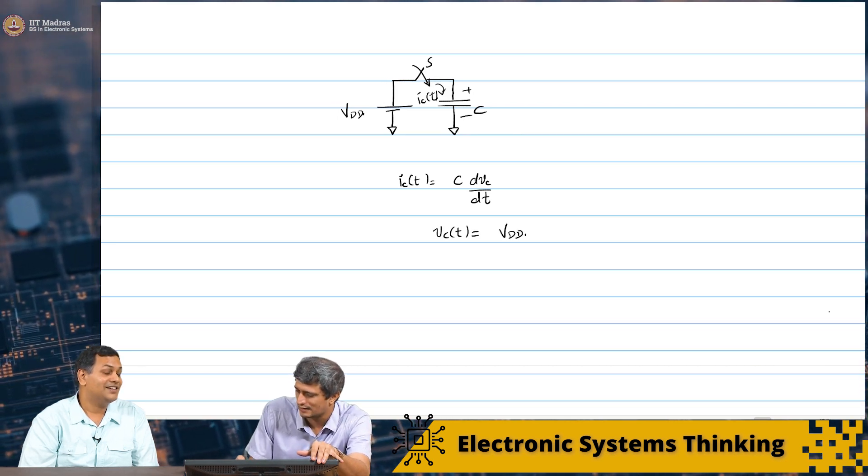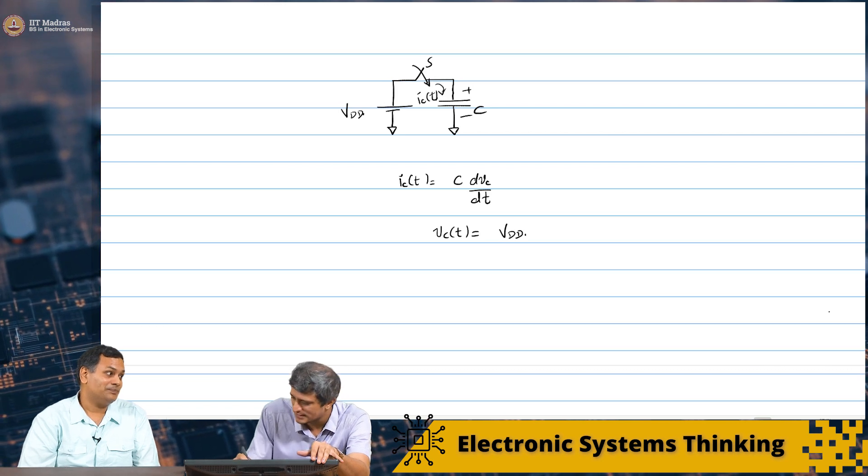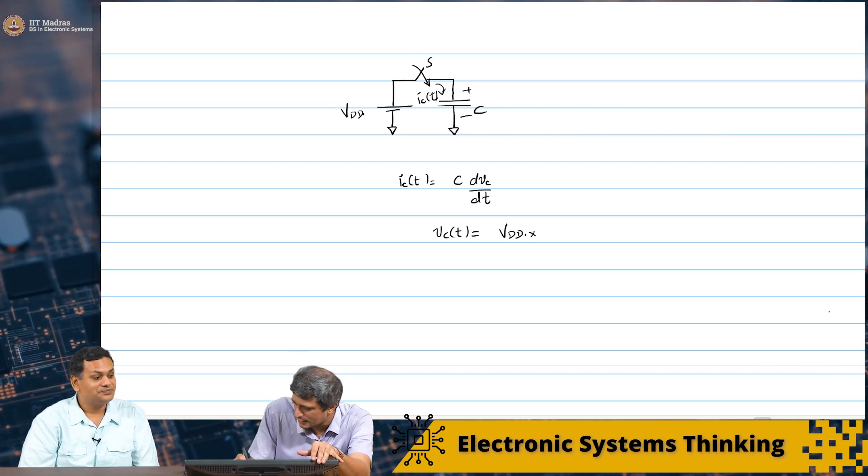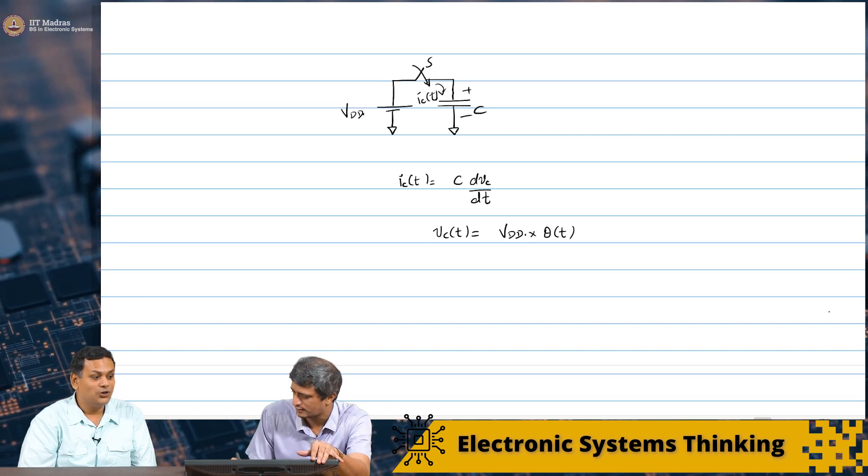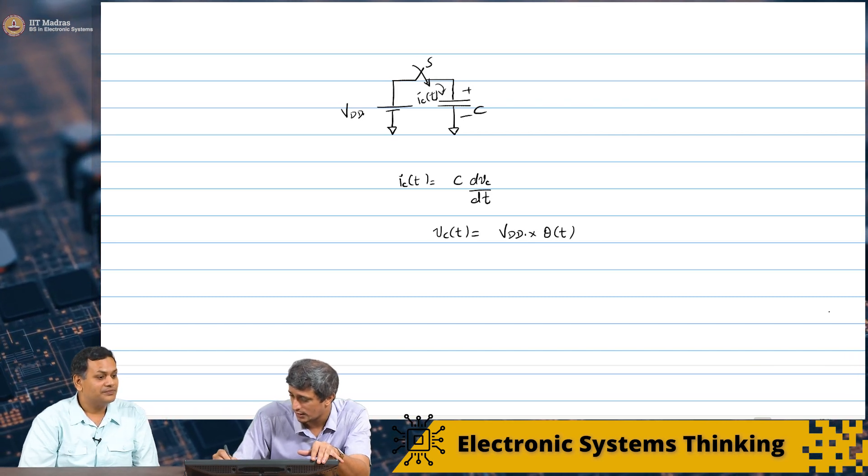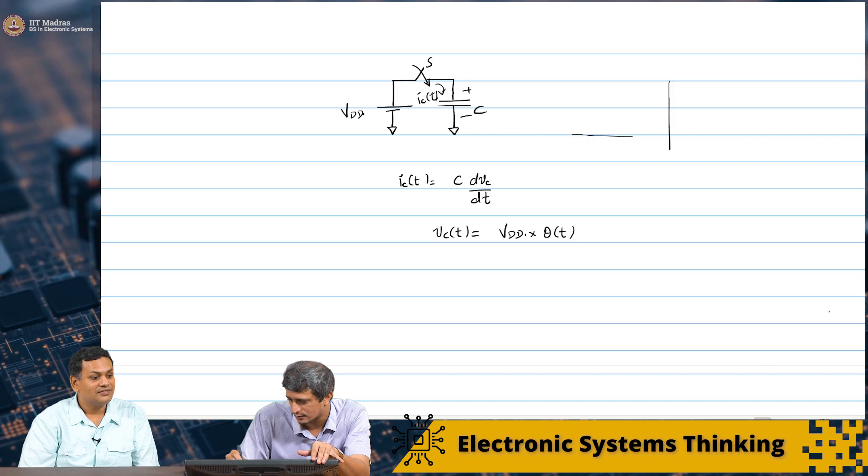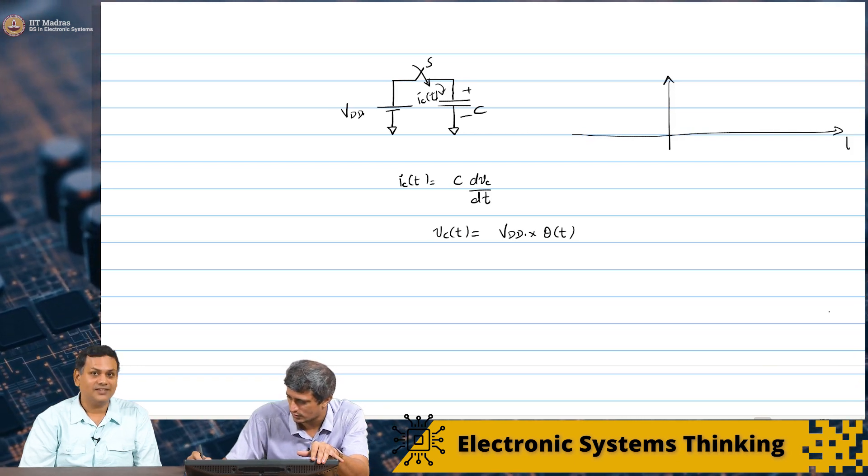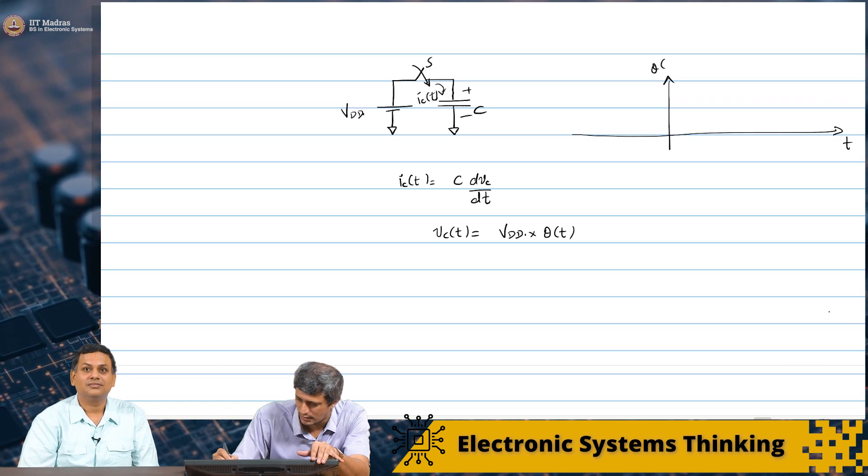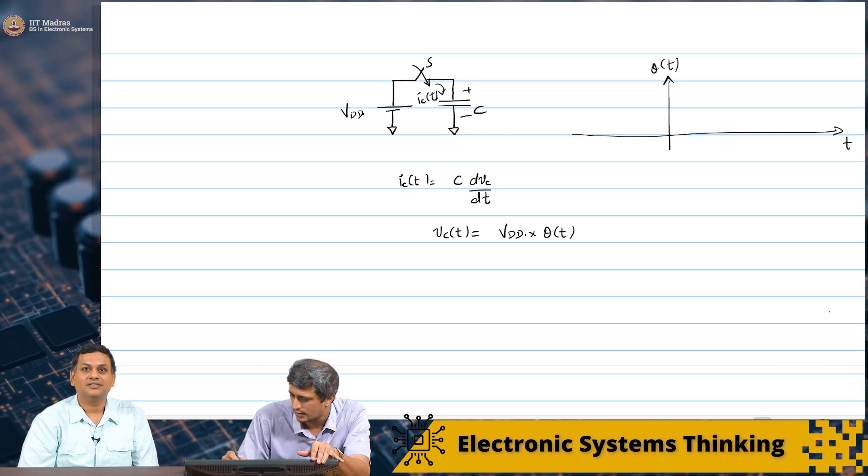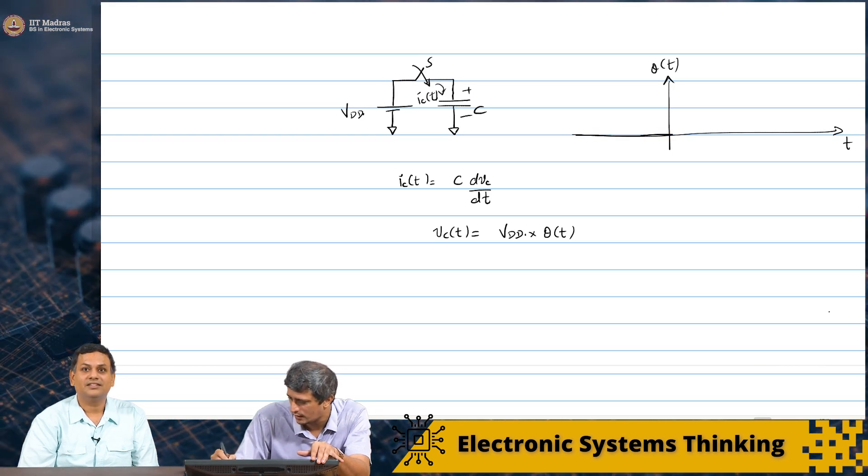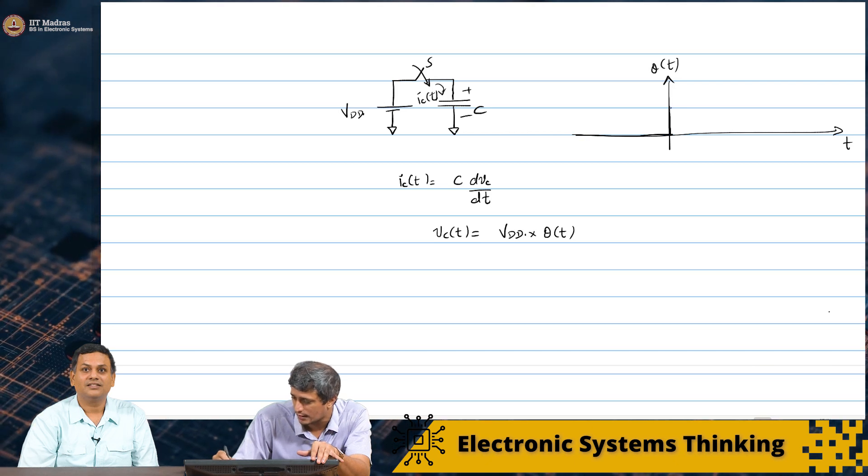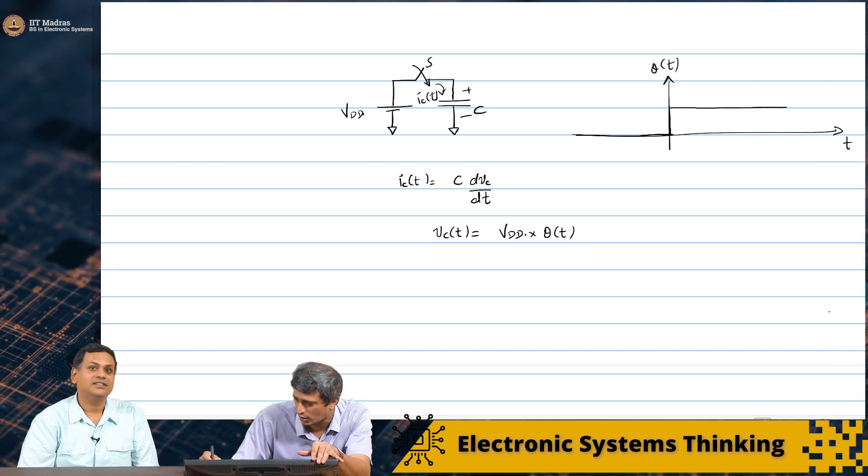Right. Exactly. Right. Around that loop. So, let us write down the equation again. This is Ic of t. Ic of t is C times dVc by dt. Yes. But what is Vc of t?